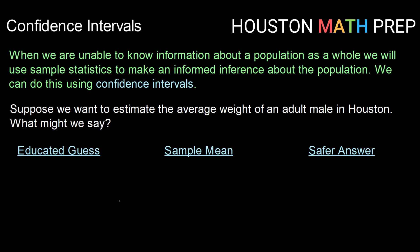So let's take an example to set up the idea of what is a confidence interval. Suppose we want to estimate the average weight of an adult male in Houston. What might we say? How might we go about that? One thing we could do is make an educated guess. Based on the males that we know from the Houston area, and based on what we think they weigh, and taking kind of an average just from our limited perspective, maybe we might say that we think the average weight of an adult male is about 180 pounds.